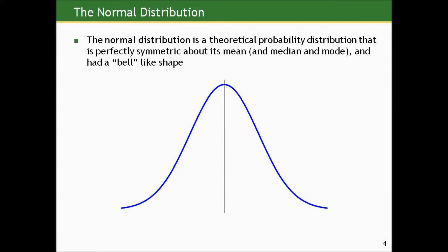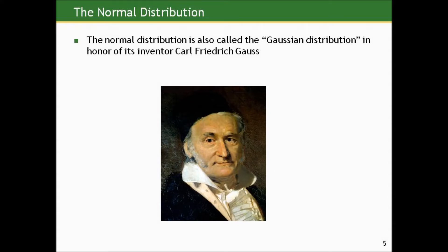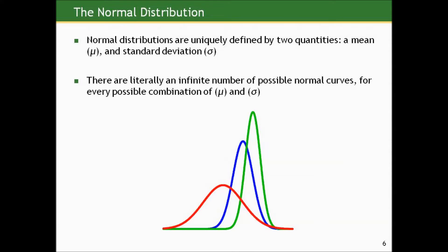It's perfectly symmetric about its mean, which is also equal to its median, which is a property of symmetry, and has a bell-like shape. It's also sometimes called the Gaussian distribution in honor of its inventor Carl Friedrich Gauss, and here's a picture of the man himself.